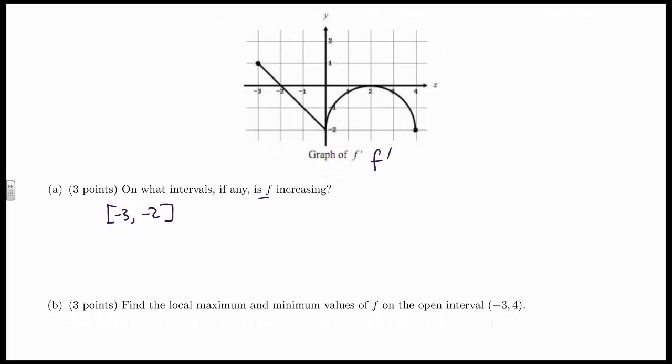In part B, find the local maximum and minimum values on the interval. Now this question you can't really answer. You can answer the location, not what the maximum values are. We do know that there must be a max at f of negative two.